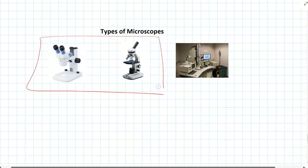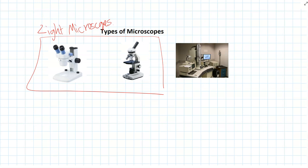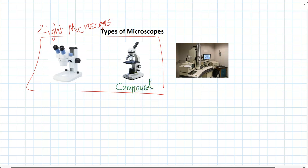There are lots of different microscopes that scientists have created. The first two types are called light microscopes, because they use light to help us see the sample. The two different types are a dissecting microscope and a compound microscope — we use compound ones at school. The dissecting microscope's other name is a stereo microscope, because it's got two eyepieces which help you see a more 3D version of the cell than just looking through the single eyepiece in a compound.